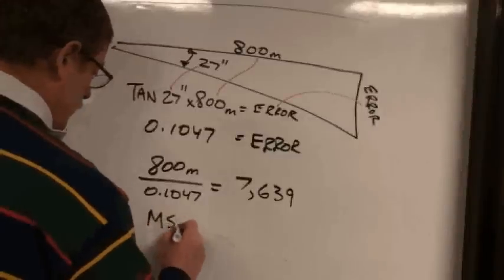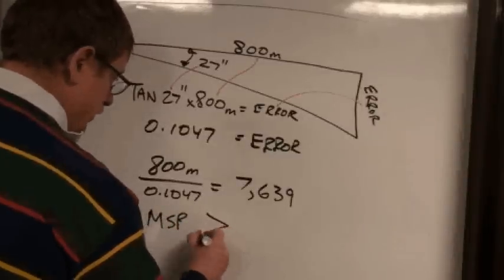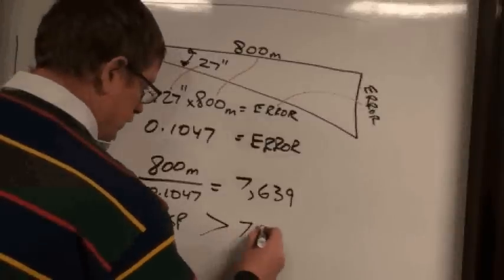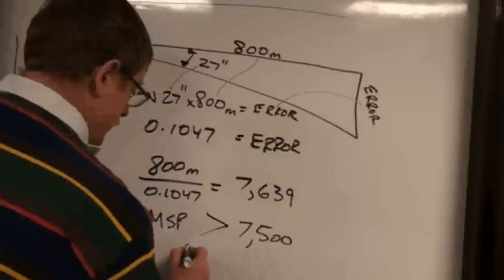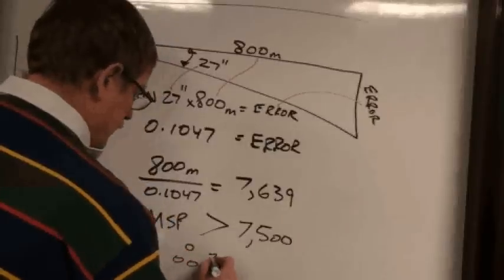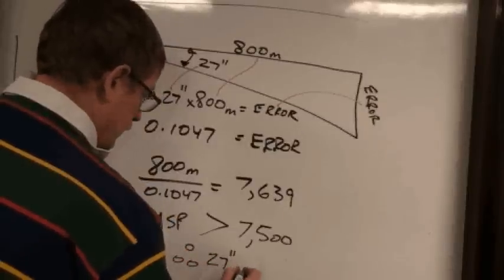The MSP says we must be better than 1 in 7,500. You'll see that 7,600 is just barely better than the one in 7,500.